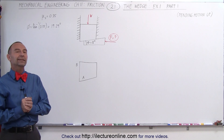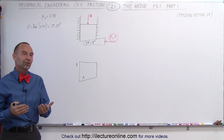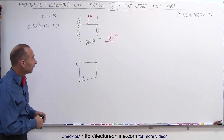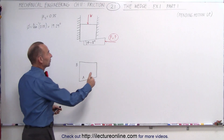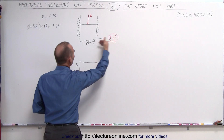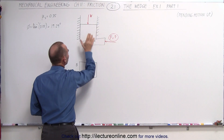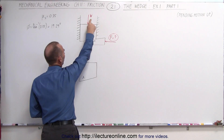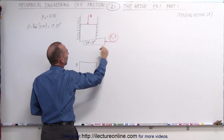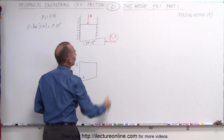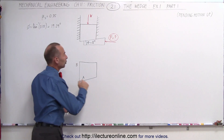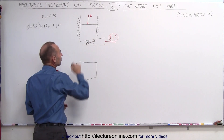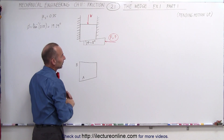Welcome to ElectronLine. Here's our first example of how to work with a wedge problem. We're driving a wedge underneath a large object, trying to push it upward. The large object has weight W, and we're applying a force F. The angle of the wedge is 8 degrees relative to the horizontal.